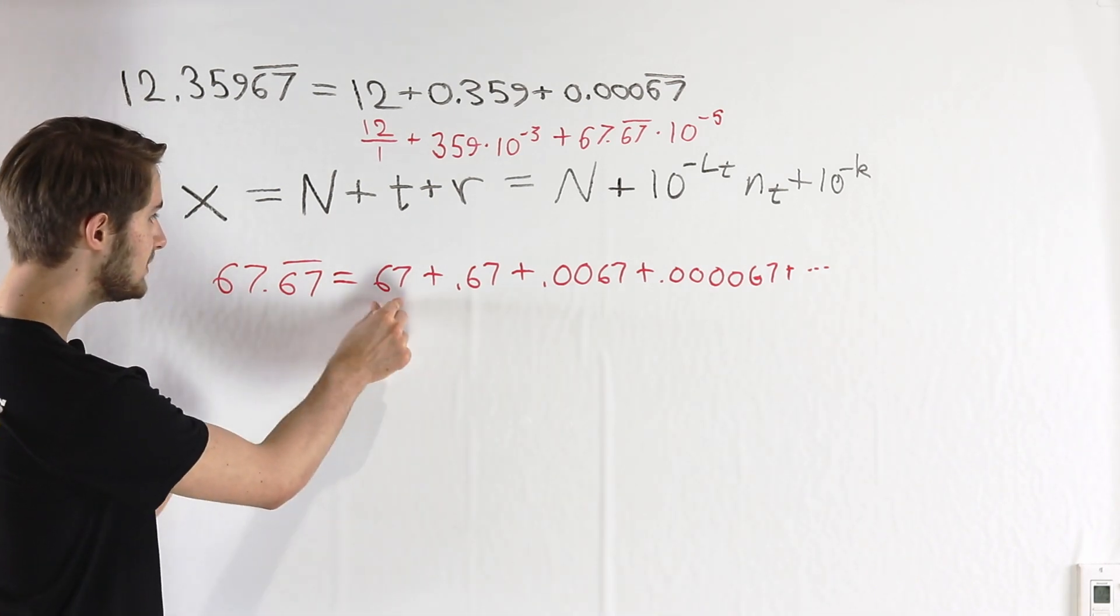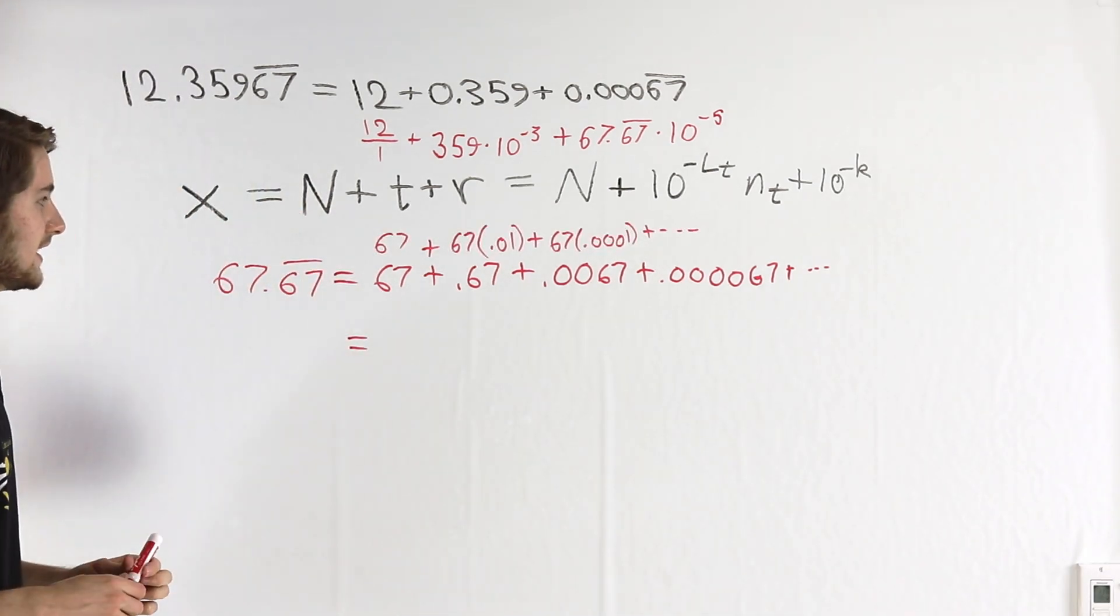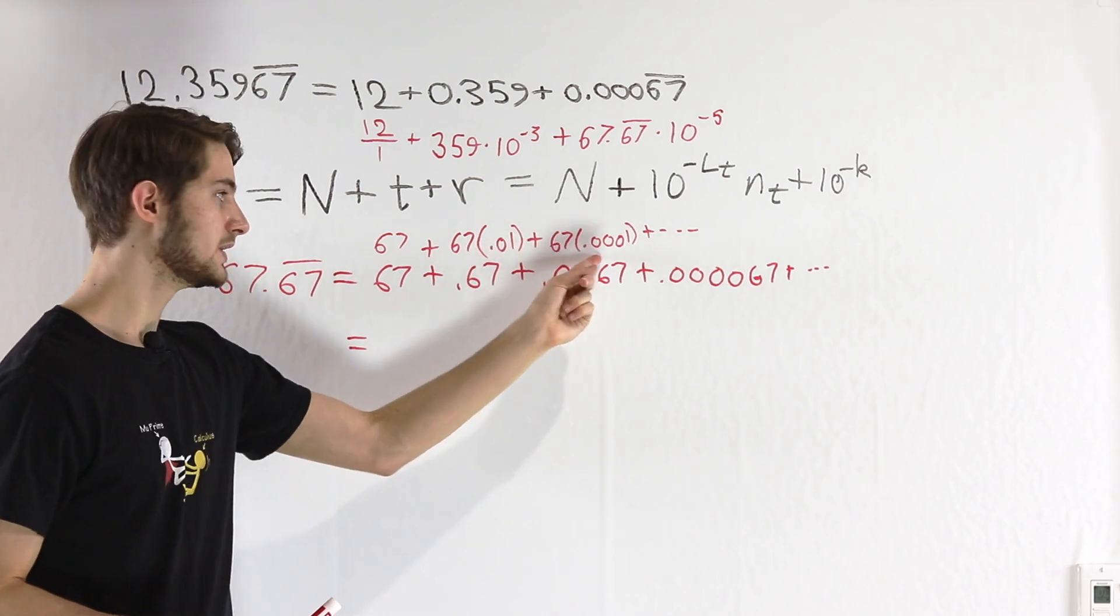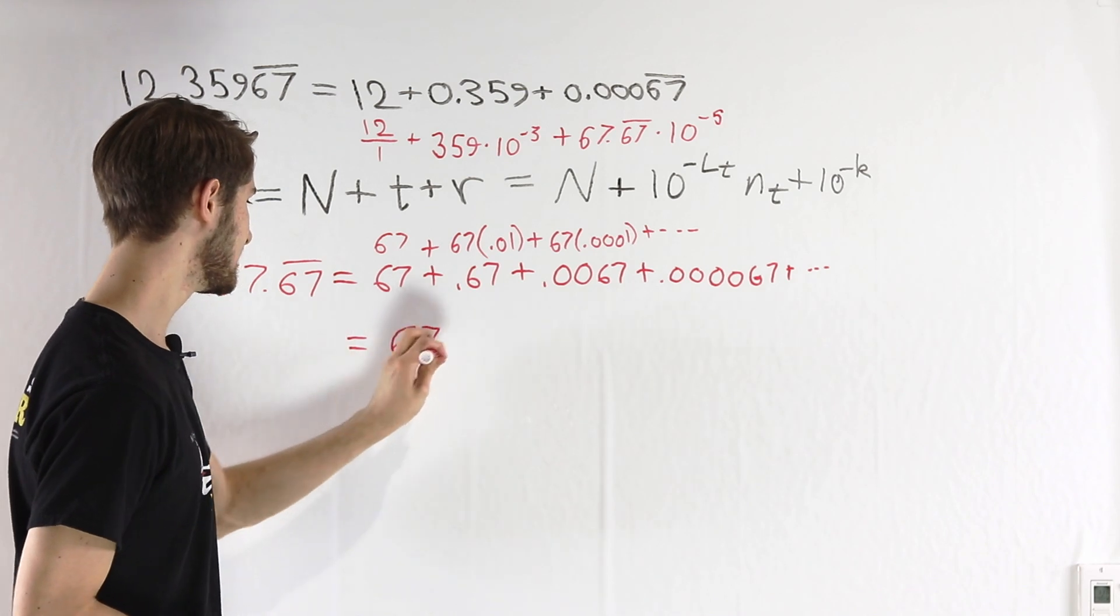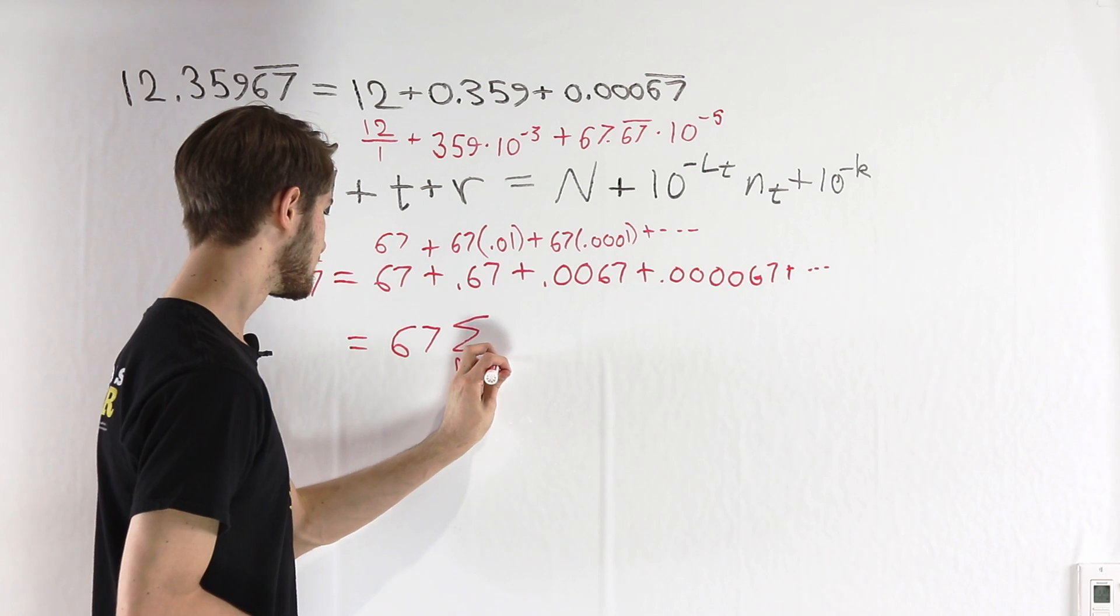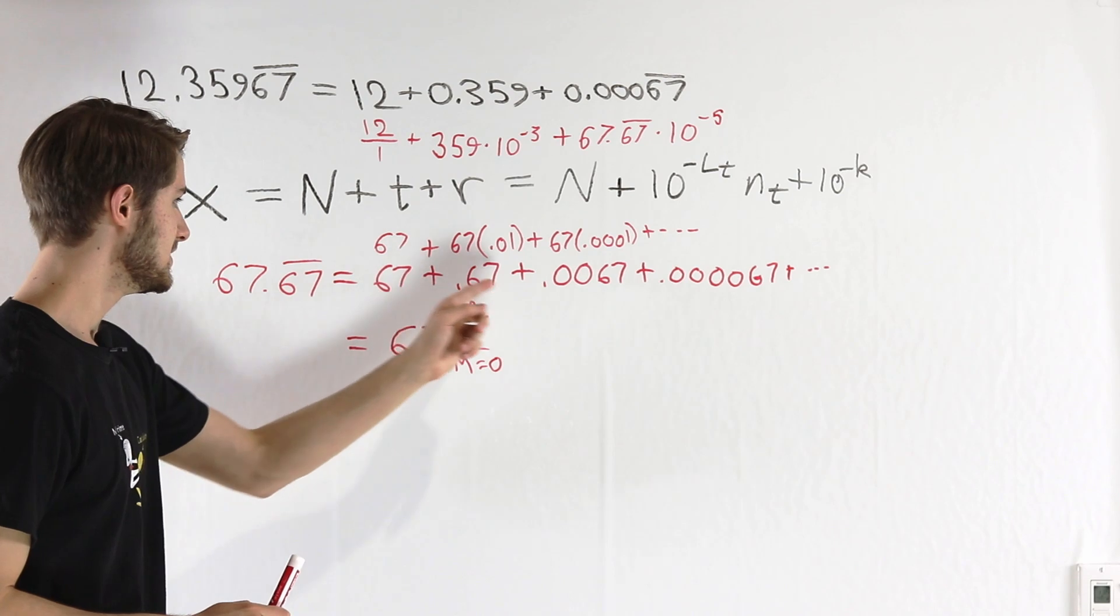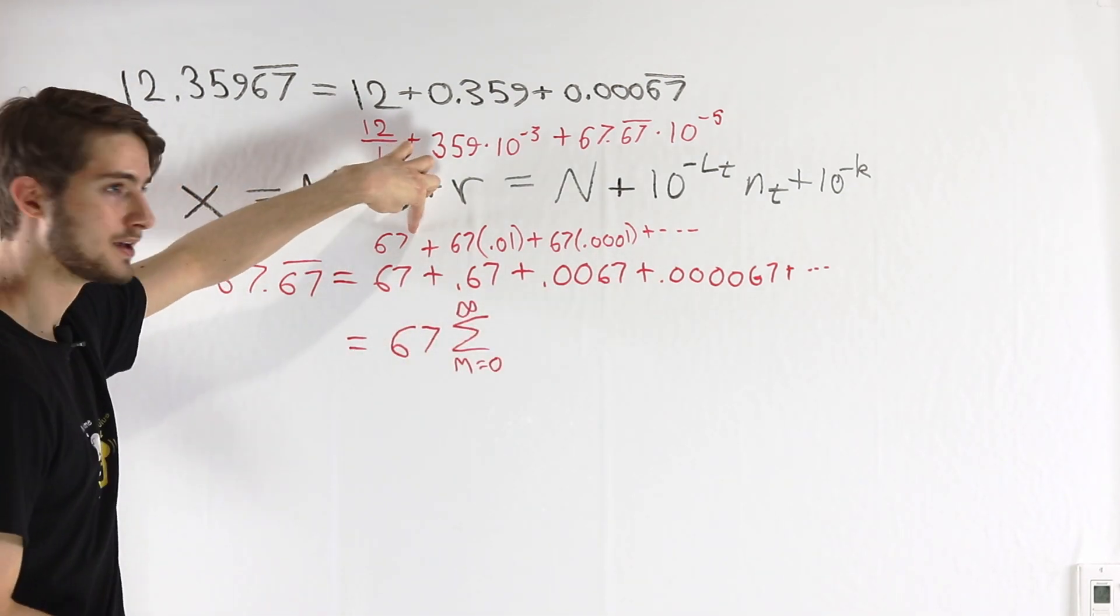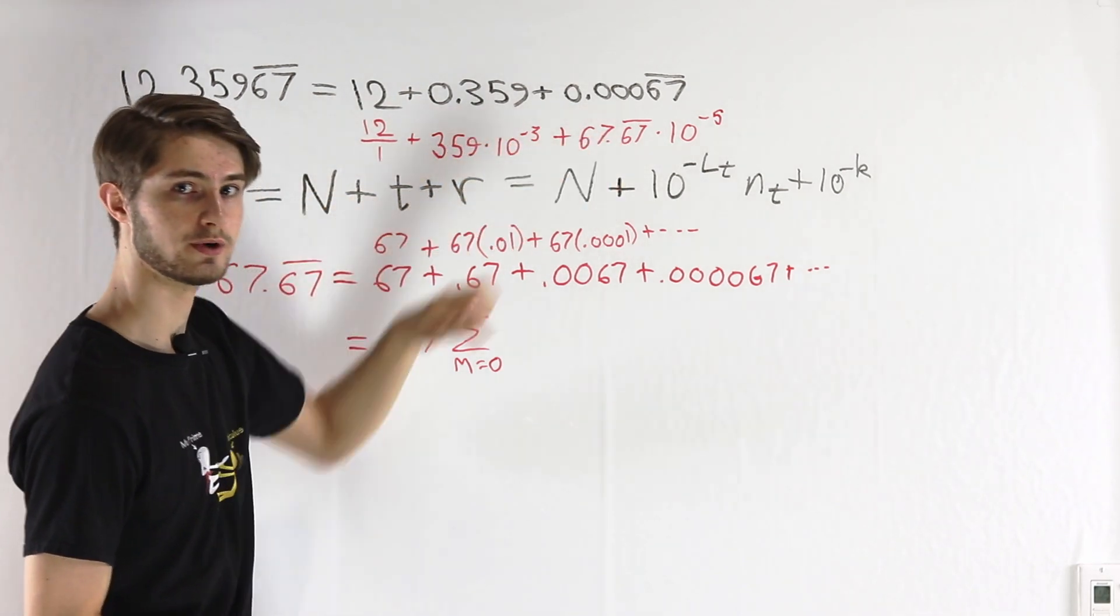First of all, we know that we can factor out a 67 from each of these terms. So in each case, we're factoring out the 67 and we're left with some power of 10. So we can write this as 67 times the sum from m equals 0 to infinity of what are we adding up in each of these terms? Well, first we had 1, and then we had 0.01, and then we had 0.0001.